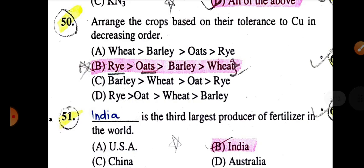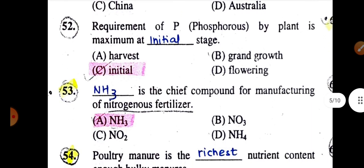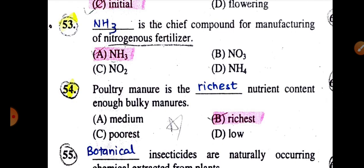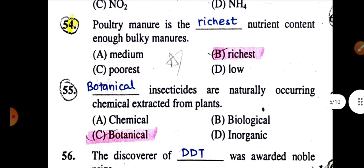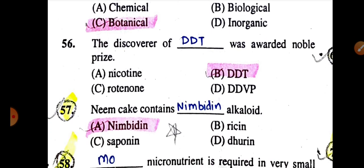Arrange the crops based on their tolerance to copper in decreasing order: rye, oat, barley and wheat. India is the third largest producer of fertilizer in the world. Requirement of phosphorus by plant is maximum at initial stage. NH3 is the chief component of manufacturing nitrogenous fertilizer. Poultry manure is the richest nutrient content of all bulky manures. Botanical insecticides are naturally occurring chemicals extracted from plants.